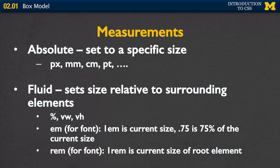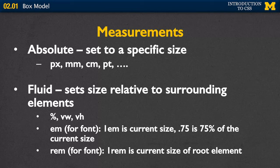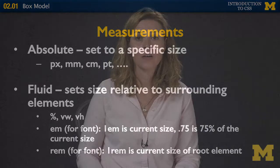There are two common ways to set height and width. The first is absolute — setting an element to a specific size in pixels, millimeters, or centimeters; pixels being most common. The second is fluid, which sets the size relative to surrounding or parent elements. Fluid units include percent, VW (viewport width), VH (viewport height), and EM and REM, which set size relative to parent elements.